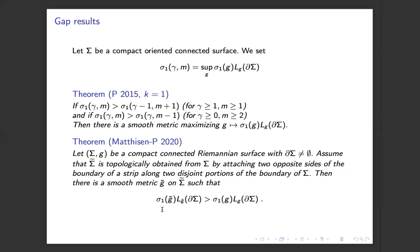These two theorems work together in order to prove that there is a maximizing metric and that these strict inequalities are true for any topology. We need to use these results for metrics that are maximal for the first Steklov eigenvalue. We know that maximizers have multiple first Steklov eigenvalue — there is multiplicity — and this is why this result is not easy to prove.